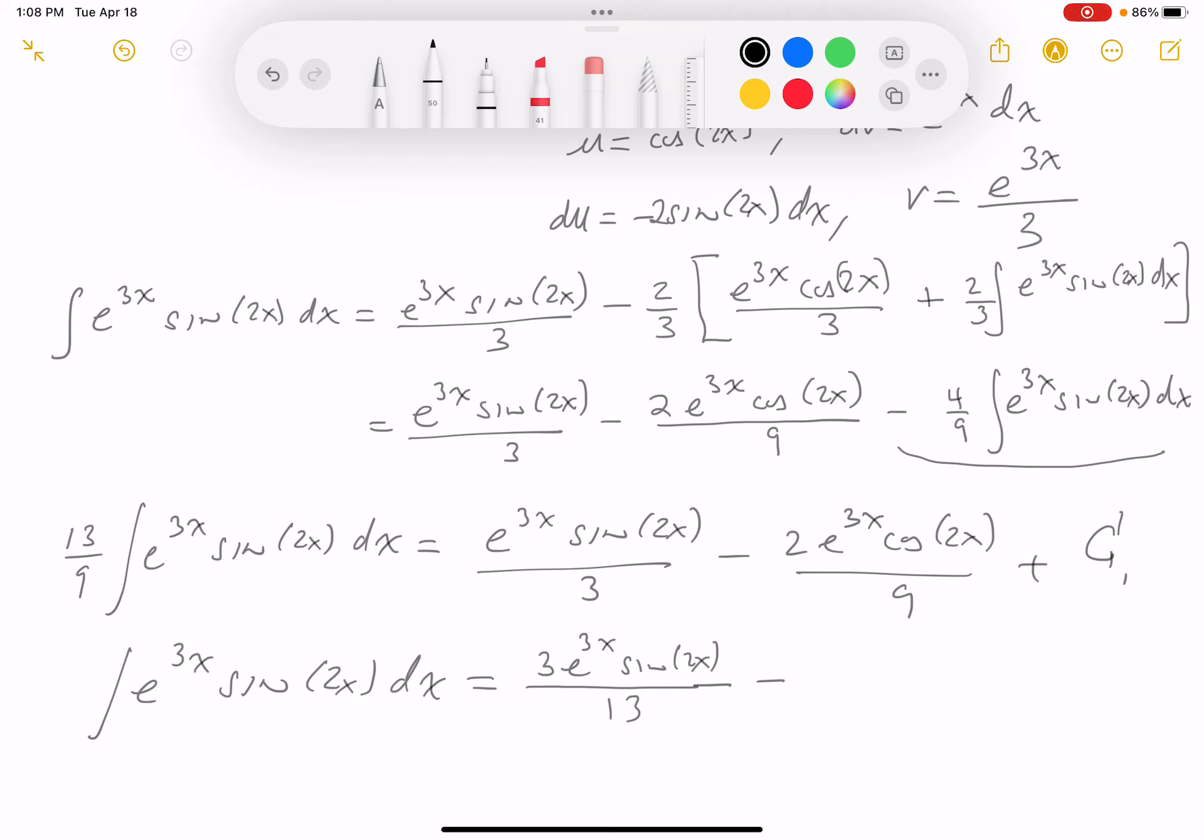Minus—and again I'm multiplying by 9/13, so the 9 would cancel and I'd get 2/13—so 2/13 times e^(3x) cos(2x). Now when I multiply c1 by 9/13, I'll just get another constant, and I'm going to call it c2 or just simply c. So I'm going to put a box around this, indicating I think I'm done.